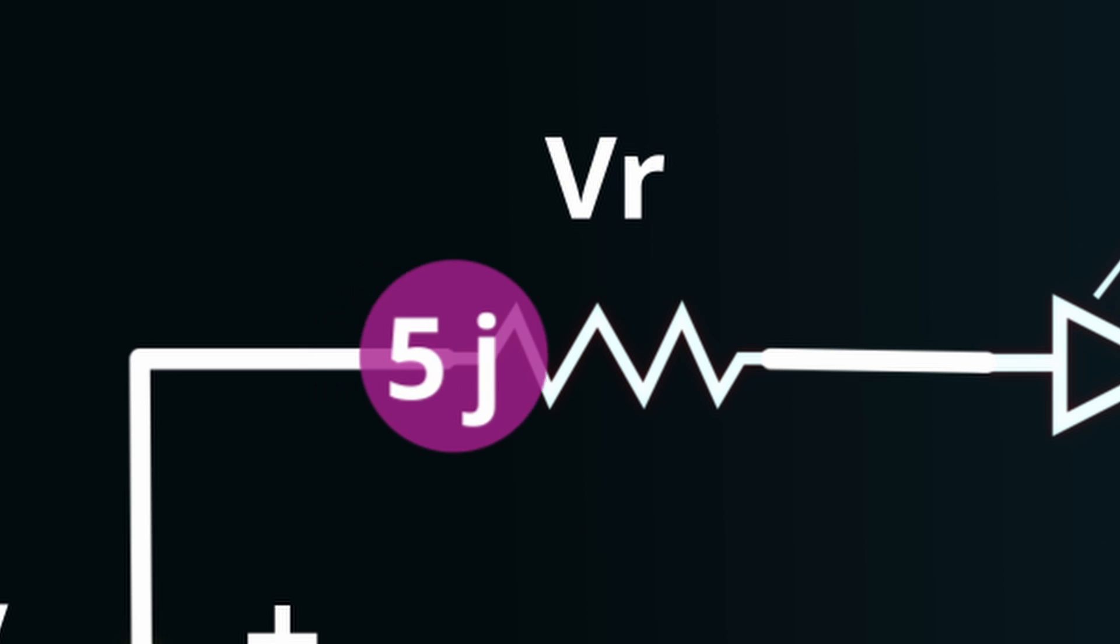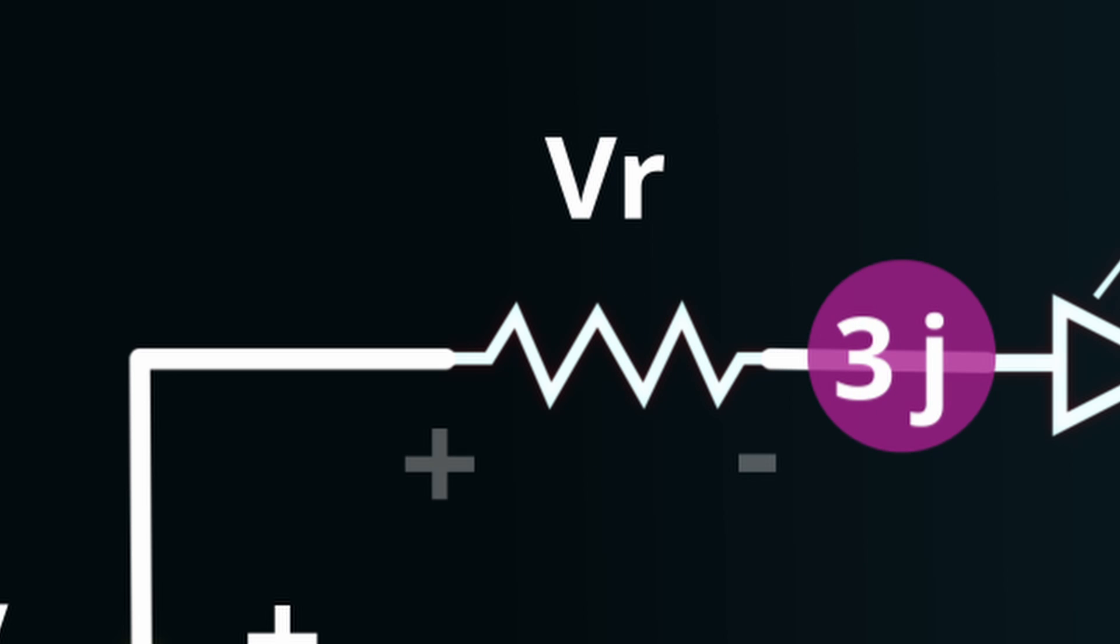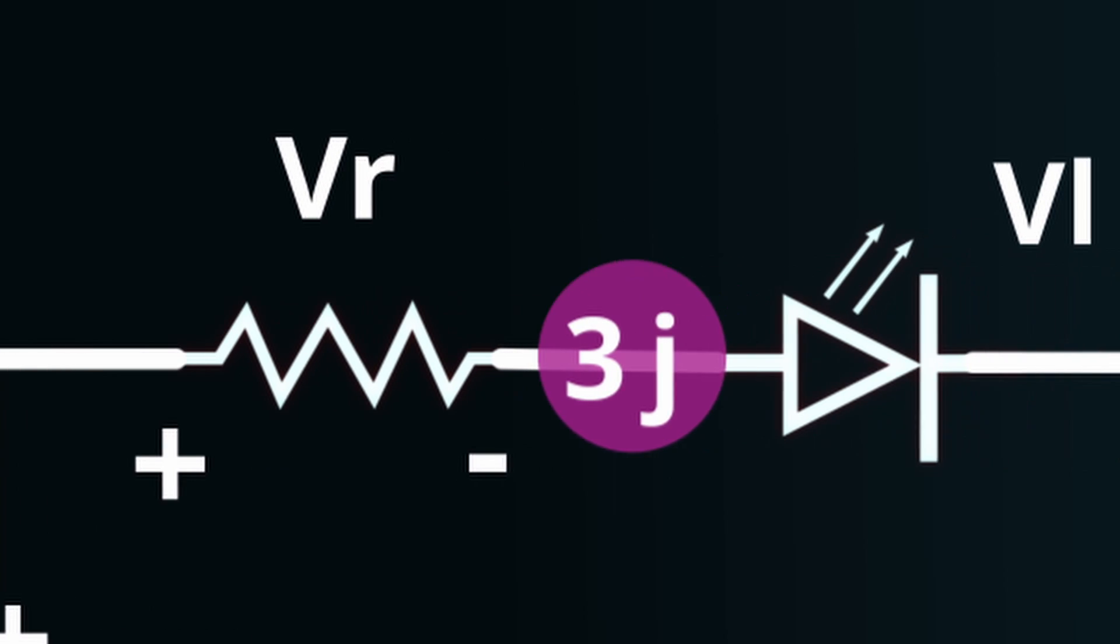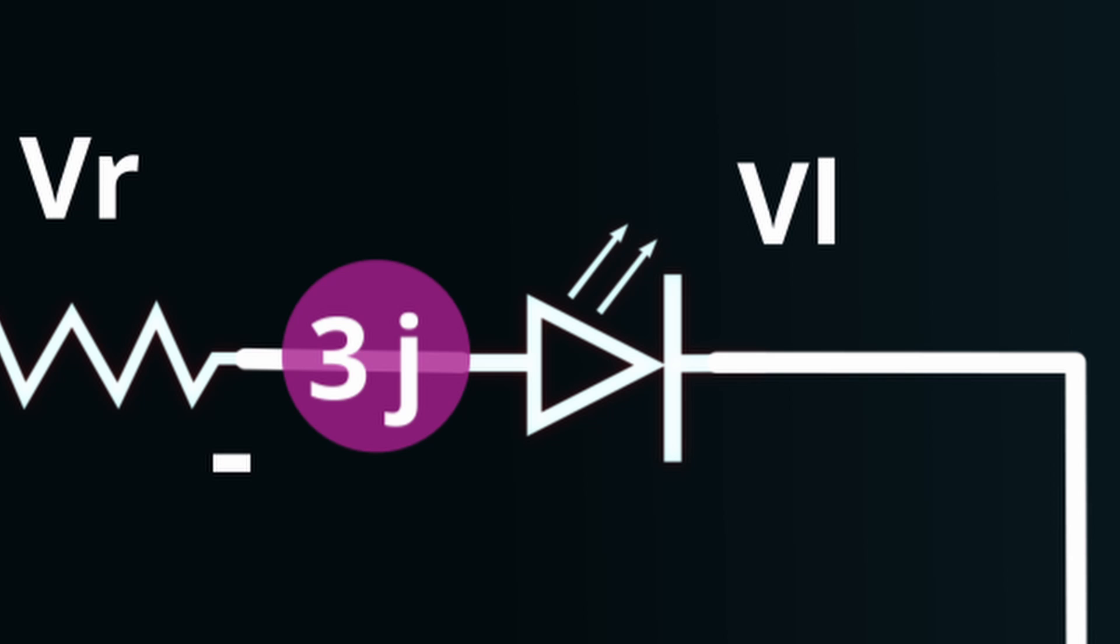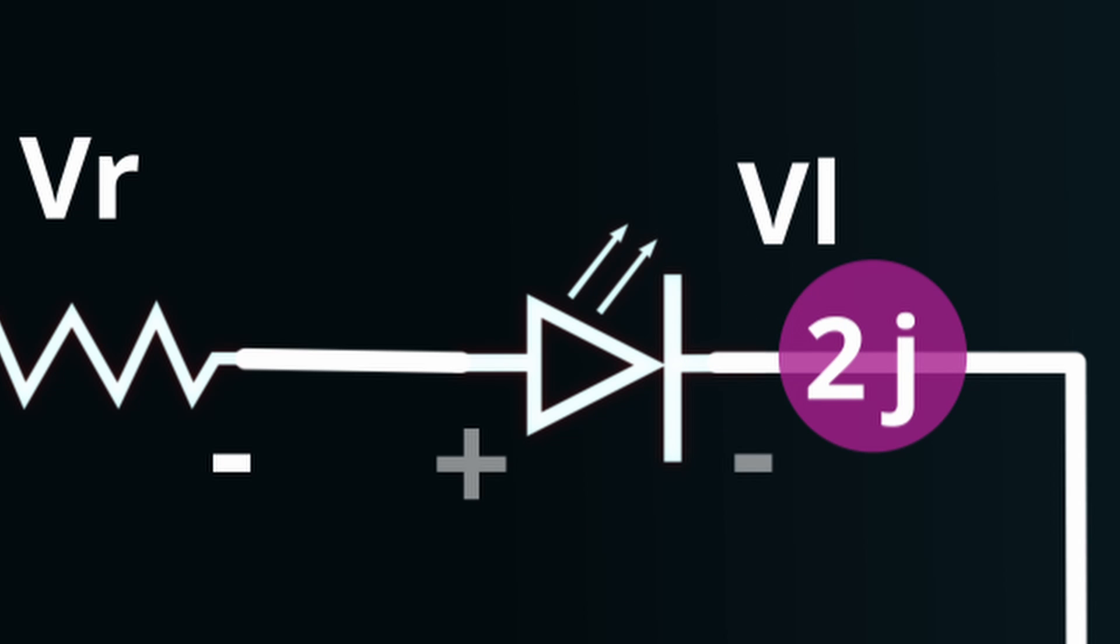To traverse this component, the charge expends a portion of its energy, translating to a voltage drop across the resistor. The charge continues its journey, next arriving at the LED. Here too, it has to dispense some energy to move through, creating another voltage drop.